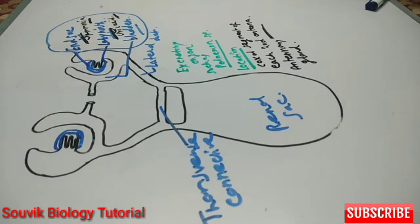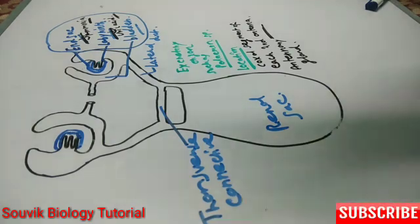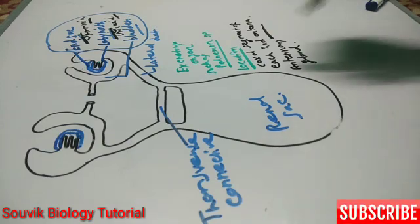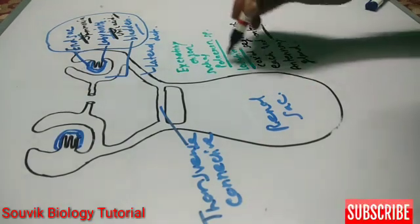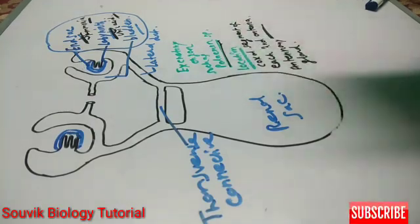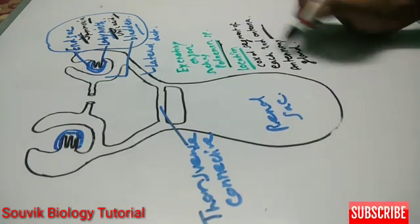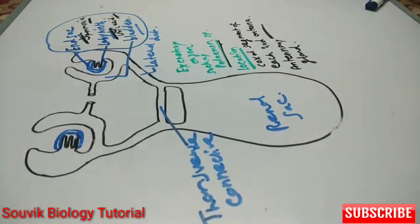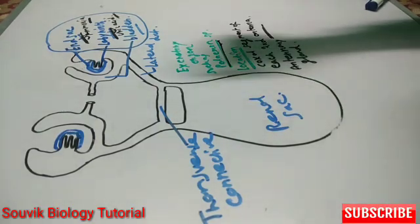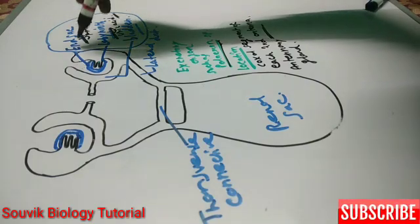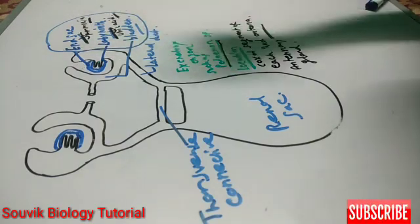I will again repeat. Green gland is mainly the excretory organ of some Crustacea such as Palemon. In Palemon the main excretory organ is green gland which is located at the coxal segment of each second antenna. Now this antennary gland or green gland in Palemon consists of end sac, labyrinth and bladder.